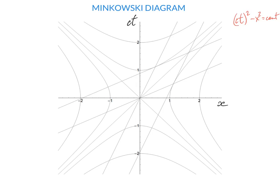They form two groups. For one group, the constant is positive; for the other group, the constant is negative. A positive or negative constant corresponds to the interval separating a point (t, x) from the origin being time-like or space-like. When the constant is positive, the interval is time-like. When it's negative, it's space-like.